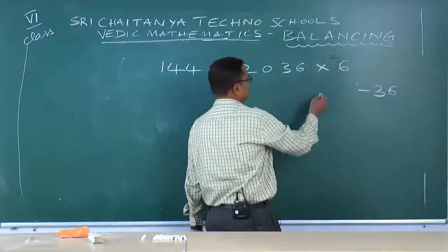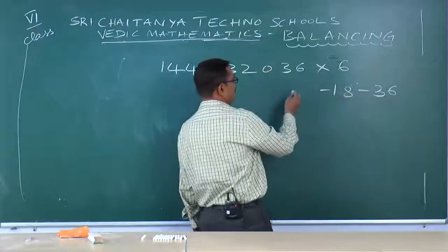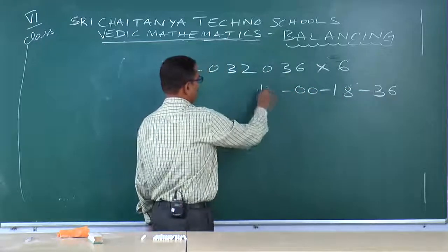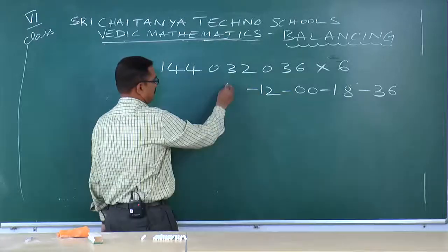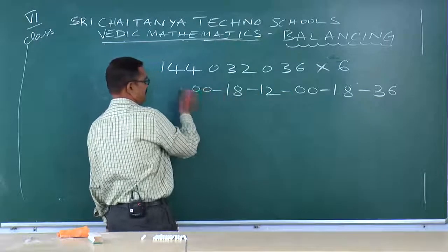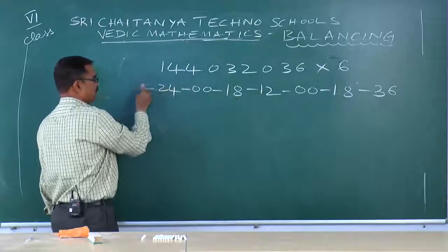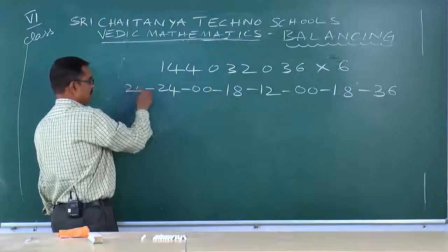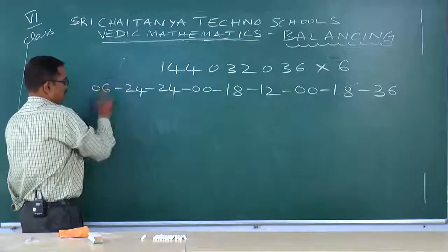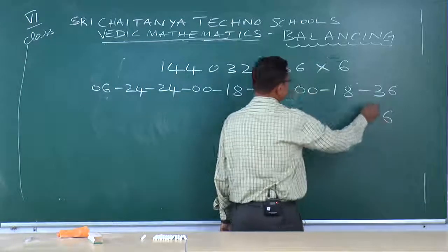6, 6. 6 into 6: 36. 18, 0, 0. 12, 18, 0, 0. 24, 24. 0, 6. 6 comes out.